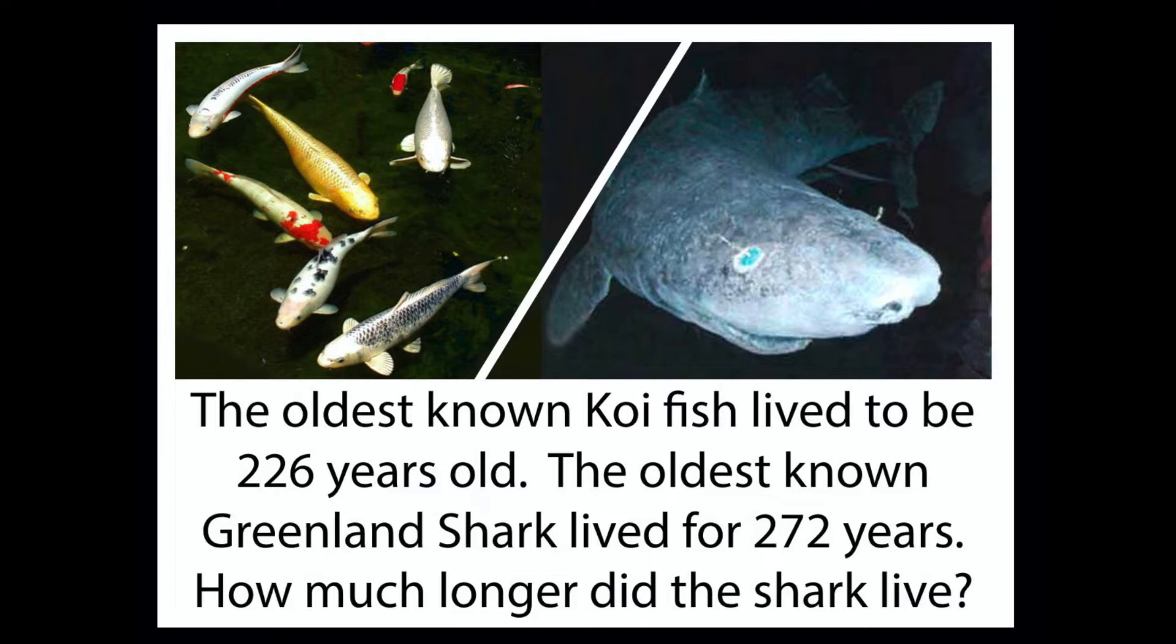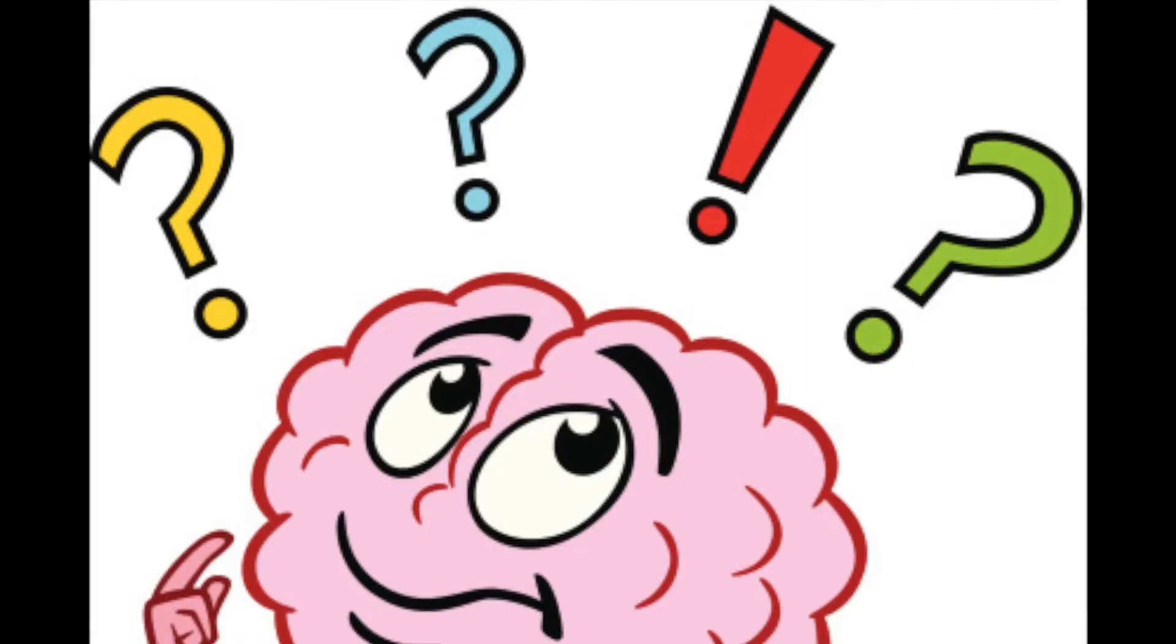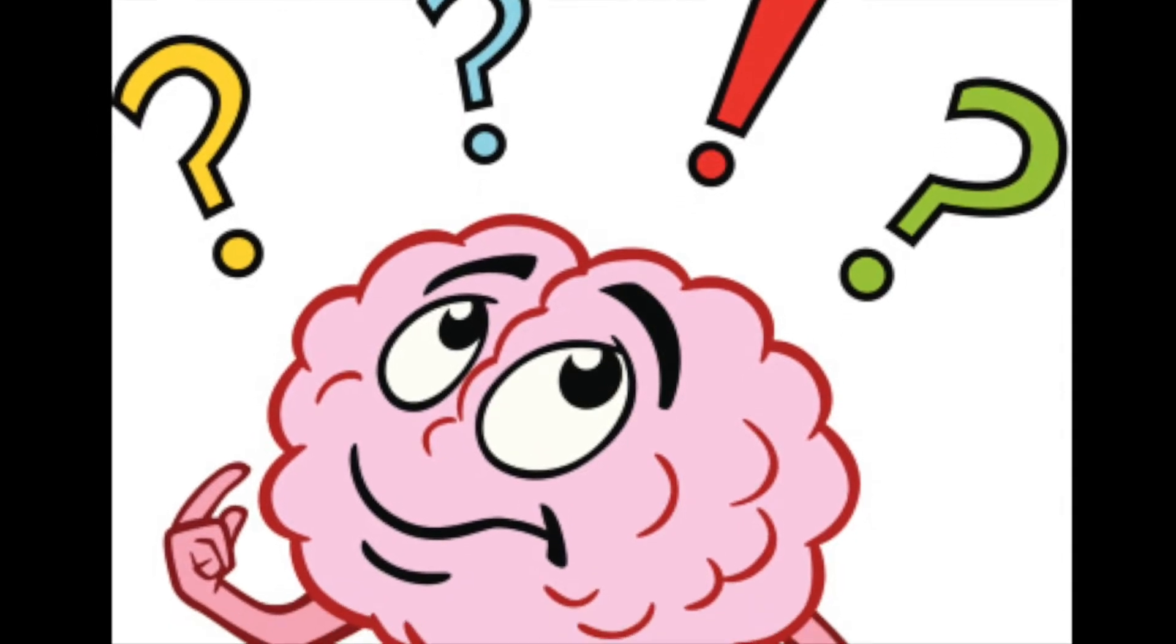Here's our problem with sharks—not a baby shark but really old sharks. In fact, the oldest known koi fish lived to be 226 years old, and the oldest known Greenland shark lived for 272 years. So how much longer did the shark live? How are we going to solve this problem?